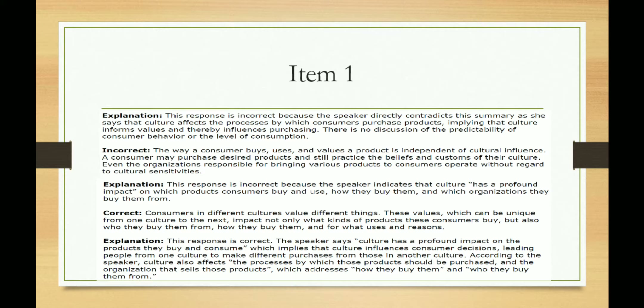The third option is also incorrect because the speaker indicates culture has a profound impact, and so on. The fourth option is correct because the speaker says culture has a profound impact on the products they buy and consume, which implies that culture influences consumer decisions — leading people from one culture to make different purchases from those in another culture. The speaker also says culture affects the process by which products should be purchased and the organization that sells those products, which addresses how and from whom they buy. So the fourth option is correct.